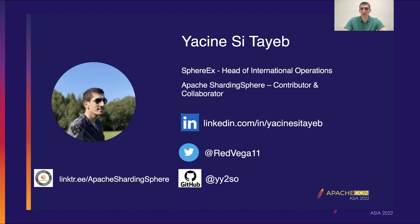If you're not familiar with Apache ShardingSphere, all you need to know is that it's a very large project that allows you to transform any database into a distributed database, but also enhance it with additional features very easily. These features include everything from data encryption to distributed transactions and more. If you'd like to know more about the project or collaborate or use it, feel free to check out the link on the bottom left of the screen, which you can also find on any of the Apache ShardingSphere community digital channels.